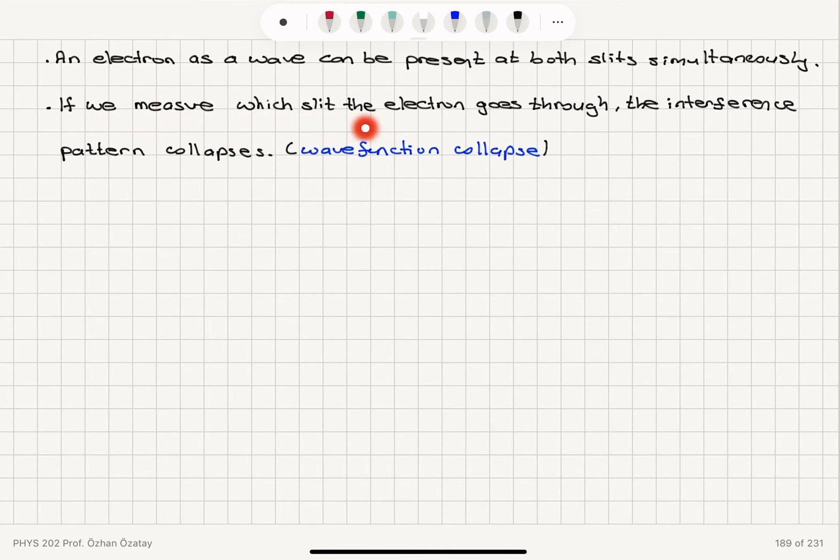However, if we measure which slit the electron goes through, the interference pattern collapses. That's called the wave function collapse.